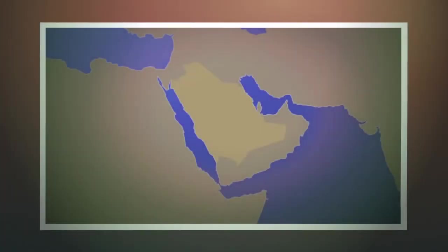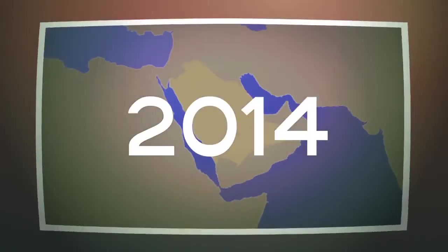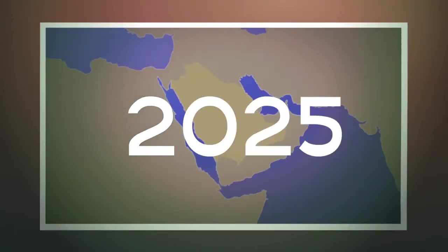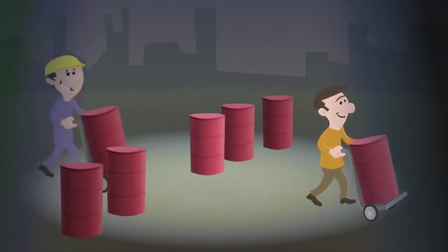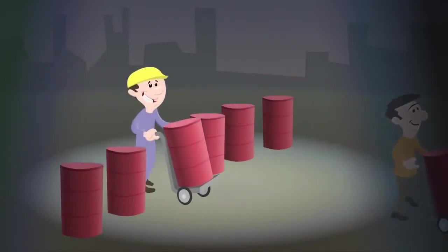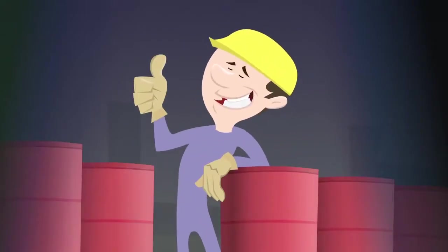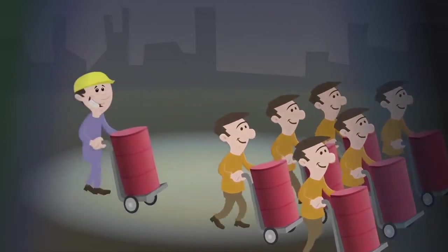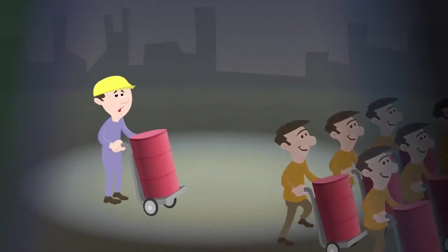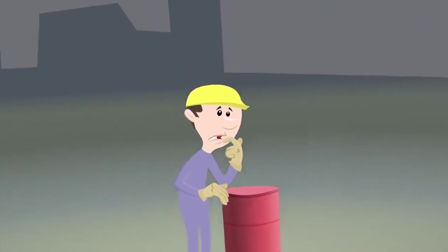The world will need to bring the equivalent of a new Saudi Arabia into production every three years to make up for declining output in existing oil fields. In the 1960s, six barrels of oil were found for every one that was used. Four decades later, the world consumes between three and six barrels of oil for every one that it finds.